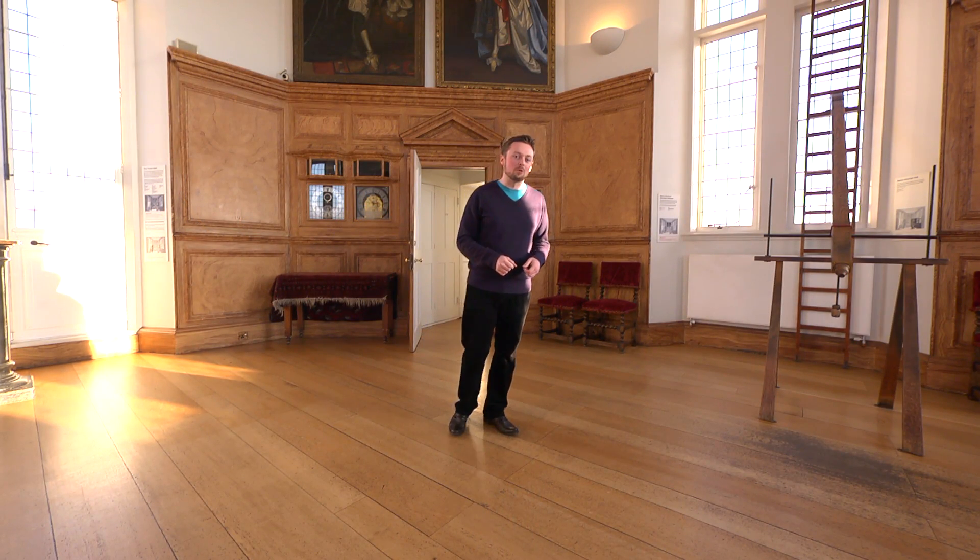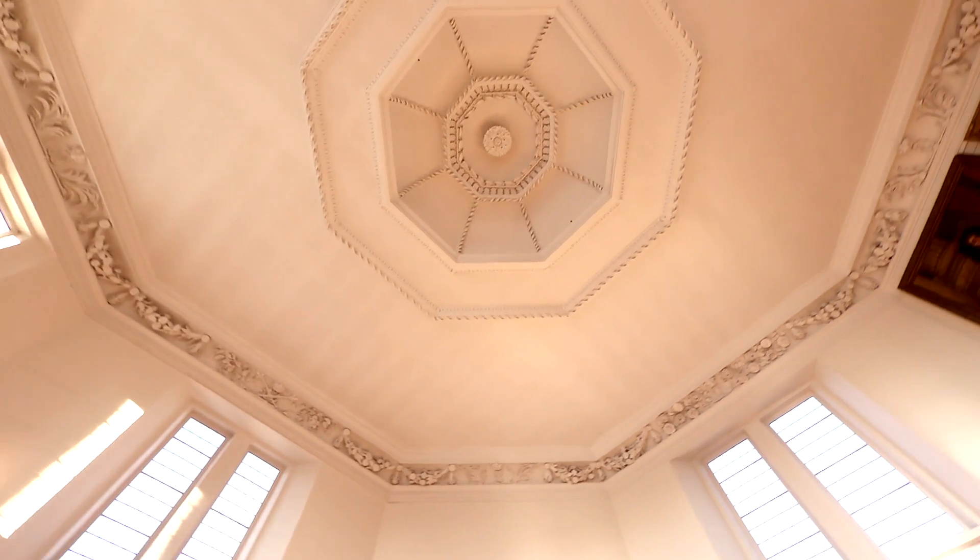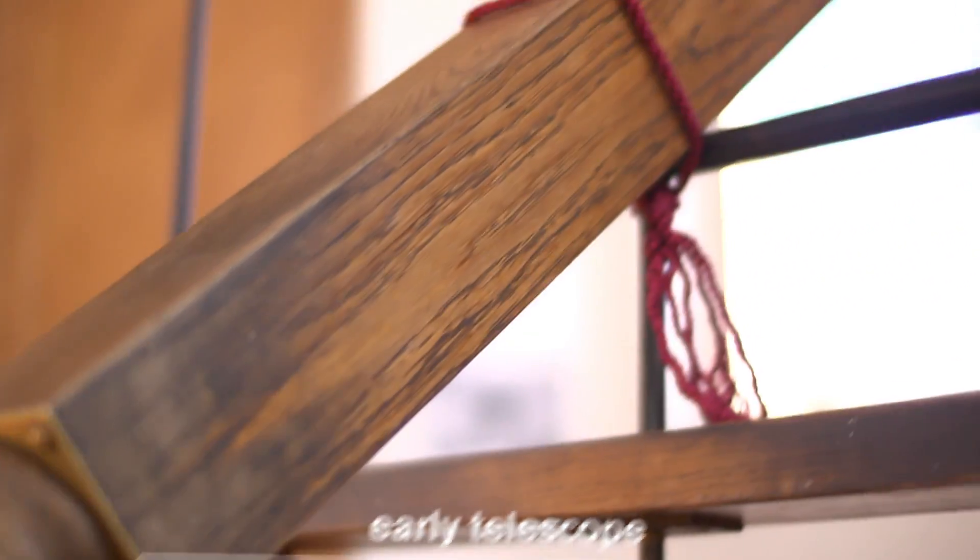I'm here in the Octagon Room at the Royal Observatory Greenwich, and this is a very special room because it's where the astronomer royals of old once looked through their early telescopes and saw amazing things like the shadows of the mountains on the moon and rare events like comets and asteroids.